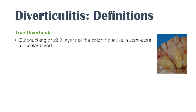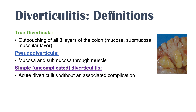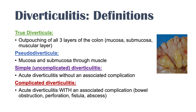A true diverticulum is an outpouching of all three layers of the colon — mucosa, submucosa, and muscular layer — whereas a pseudodiverticulum or false diverticulum only has the two layers, mucosa and submucosa, that outpouches through the muscle. Simple or uncomplicated diverticulitis is acute diverticulitis without an associated complication, while complicated diverticulitis is acute diverticulitis with a complication such as bowel obstruction, perforation, fistula, or abscess.